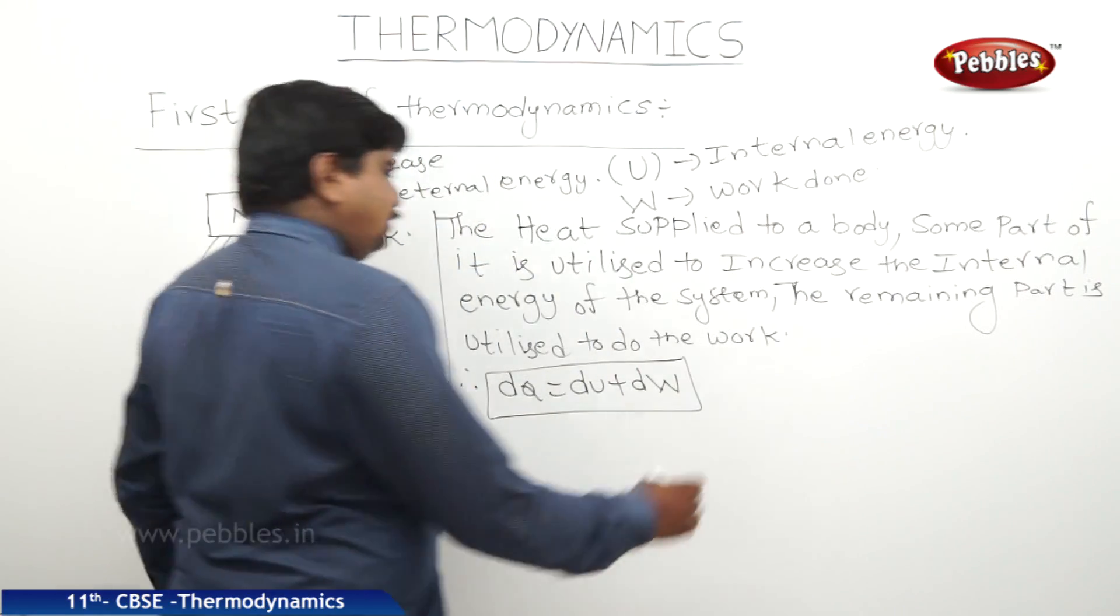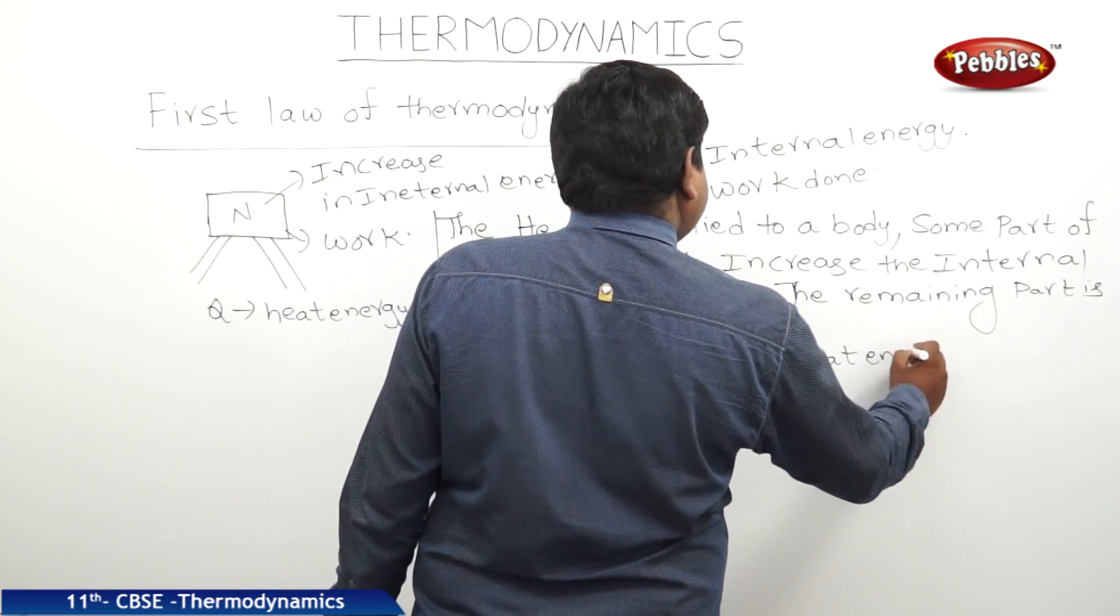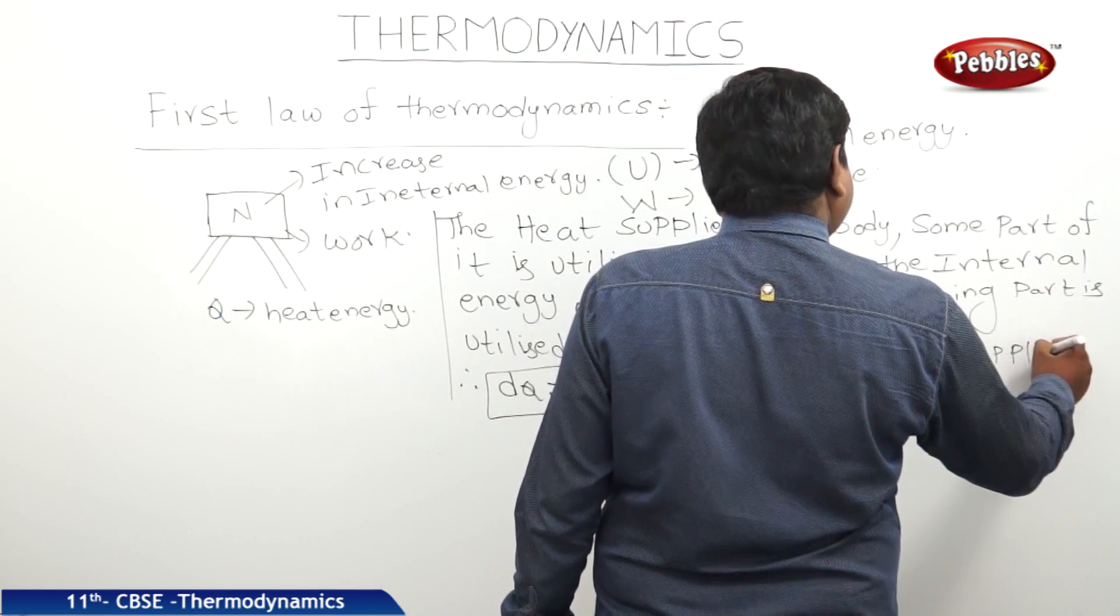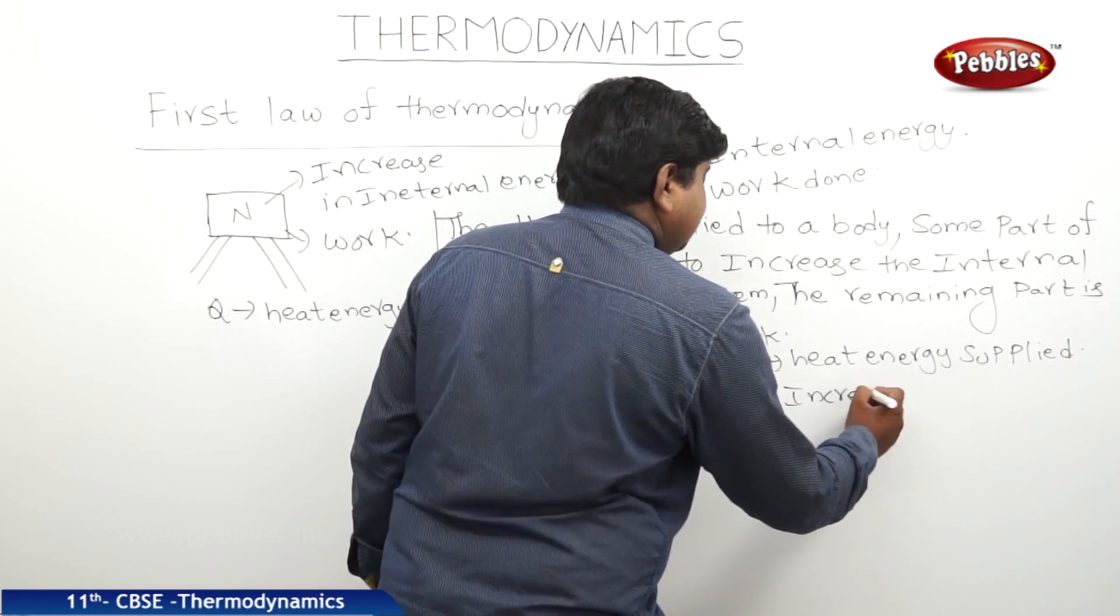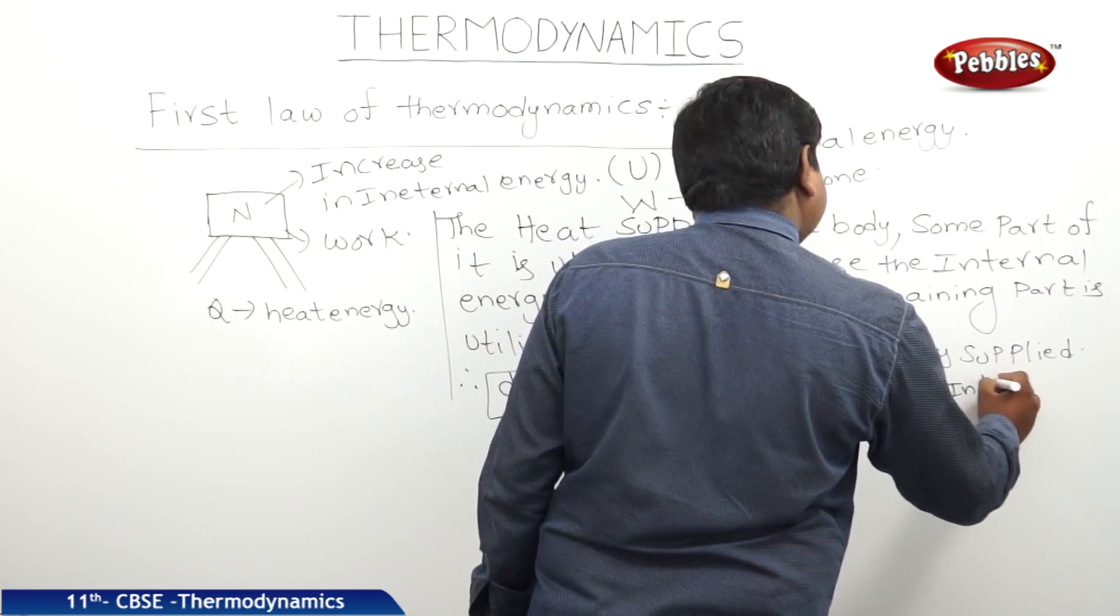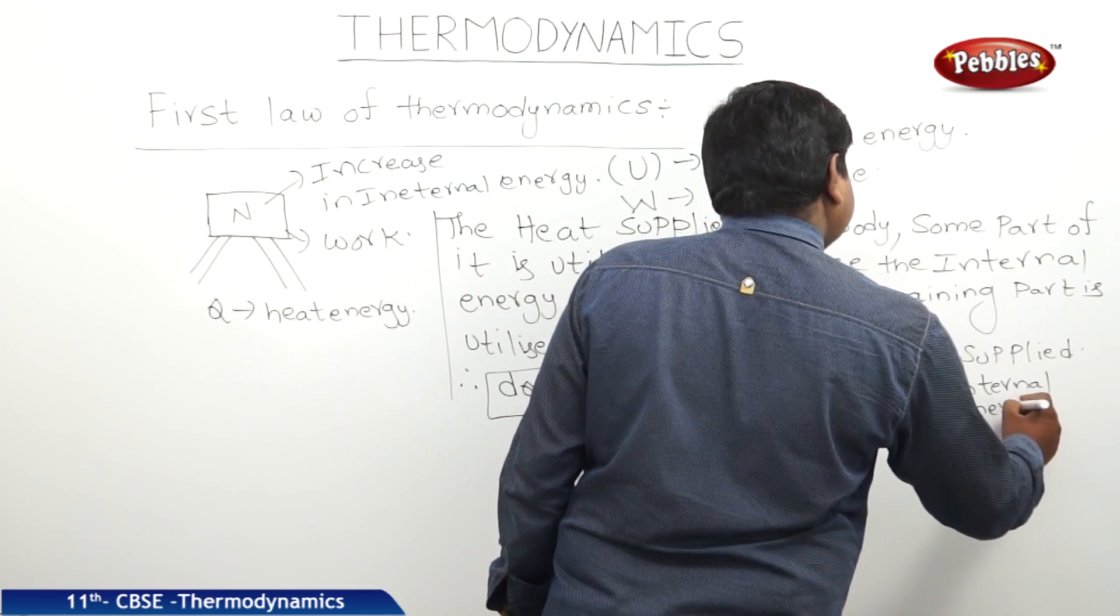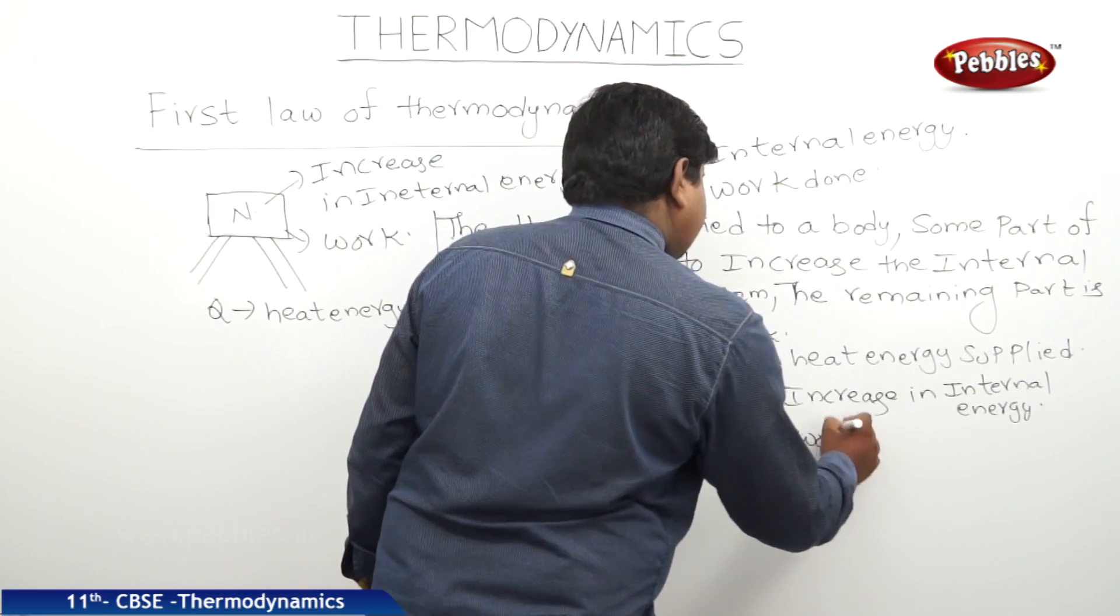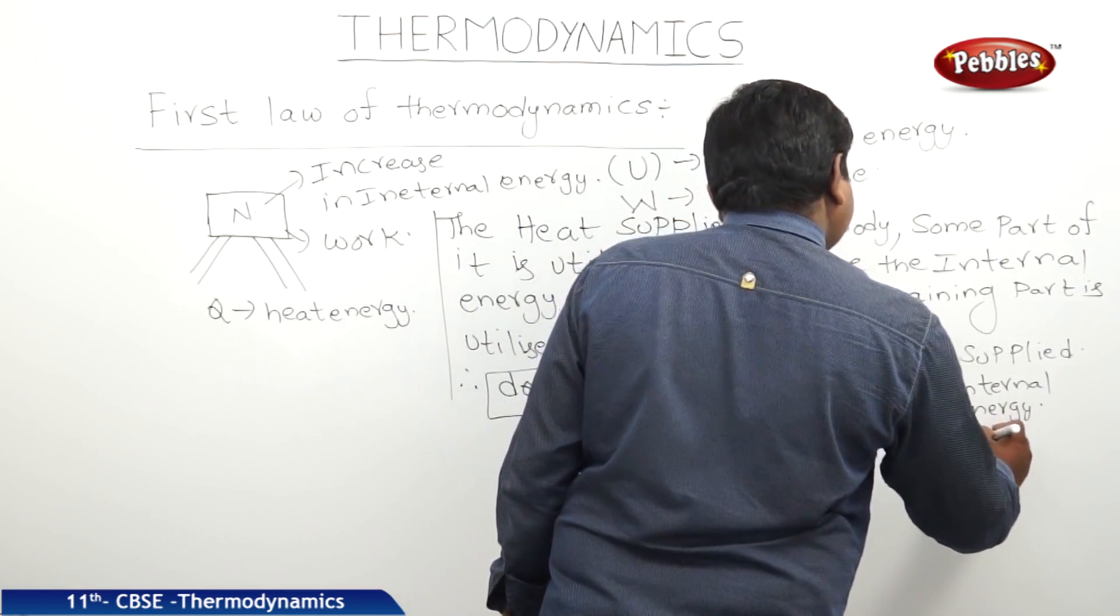Where DQ is heat energy supplied, DU is increase in heat energy or internal energy, and DW is work done by the system.